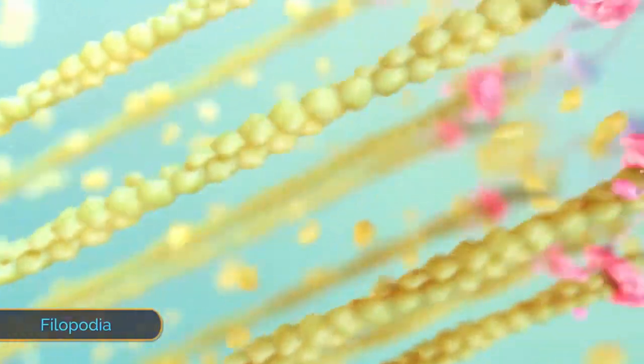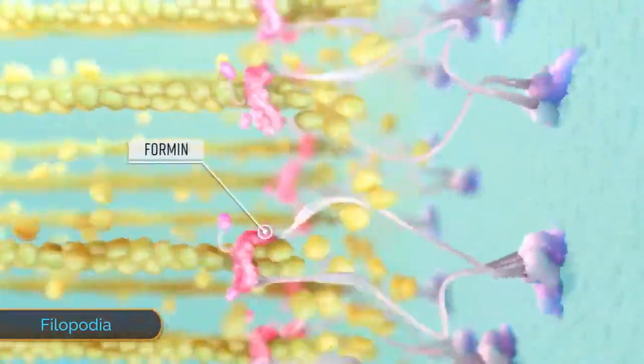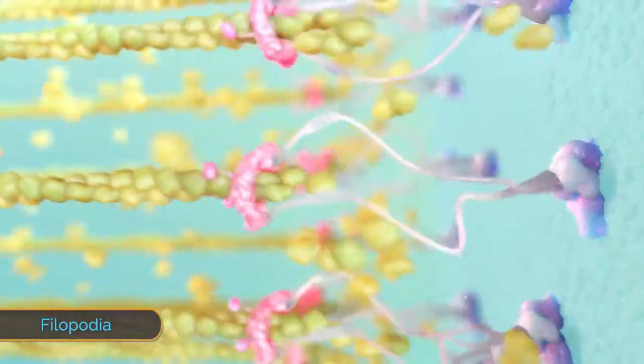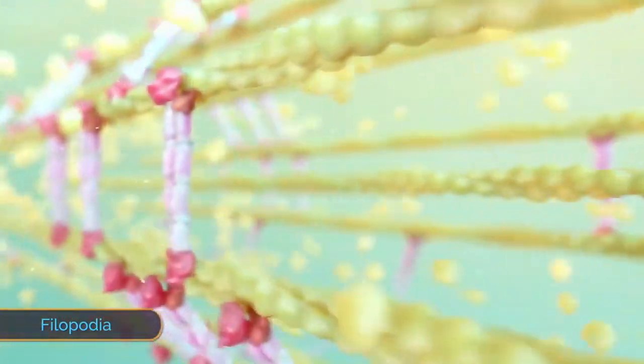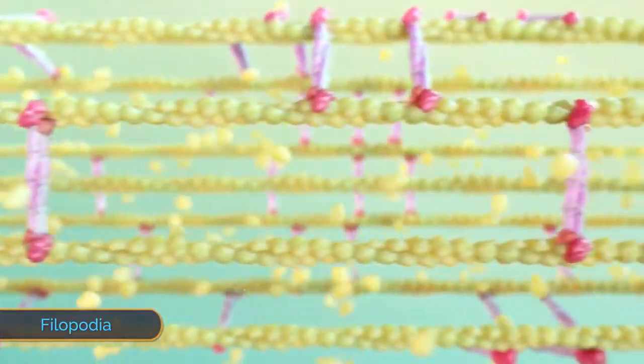Philipodia are formed by rapid elongation of parallel actin bundles regulated by elongation factors such as formin. Small cross-linking proteins such as alpha-actin bind to these filaments and strengthen these parallel actin bundles.